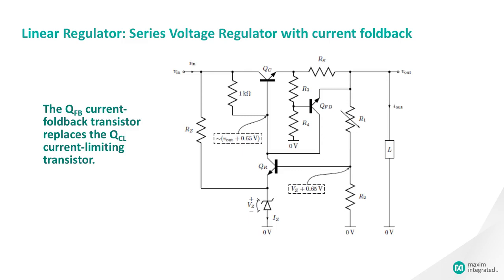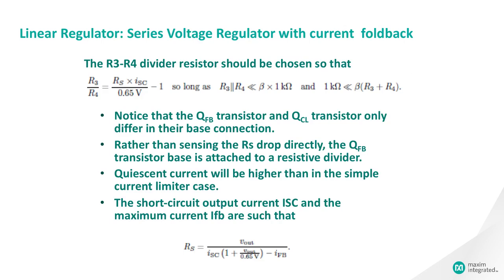This topology adds the current foldback transistor in the place of the QCL in the previous slide. This circuit maintains a constant VOUT over a range of loads that require sufficiently small current.